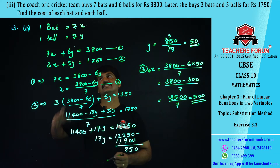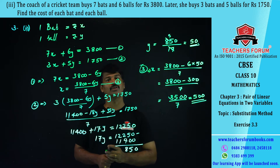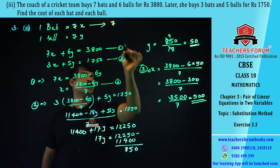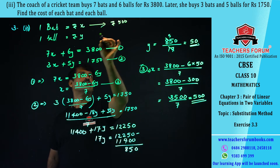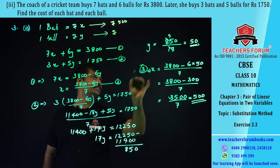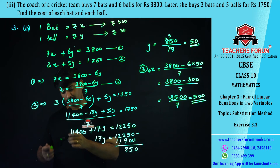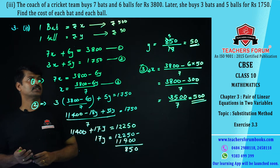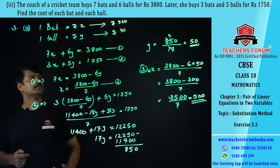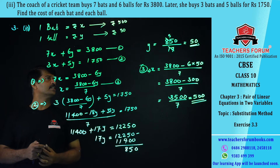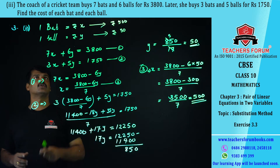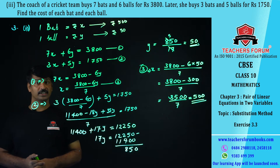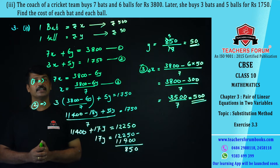The value of x is 500, which is the cost of one bat. So the cost of one bat is rupees 500 and the cost of one ball is rupees 50. From the two given conditions we formed two linear equations and using the substitution method we got x = 500 and y = 50.